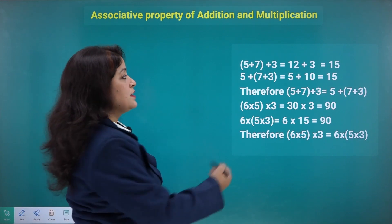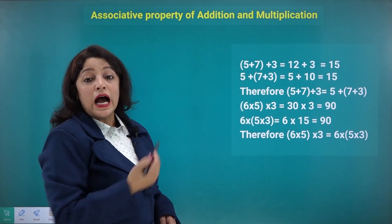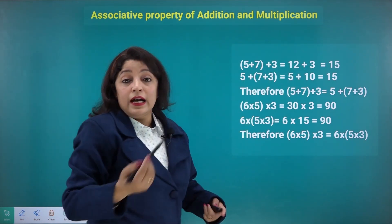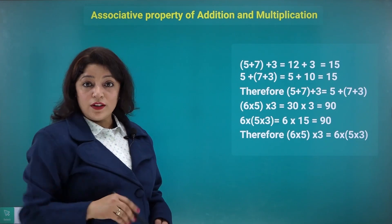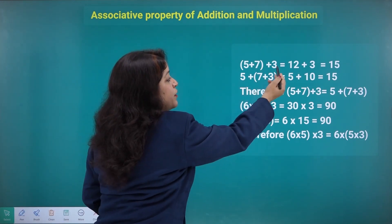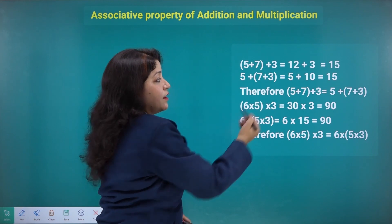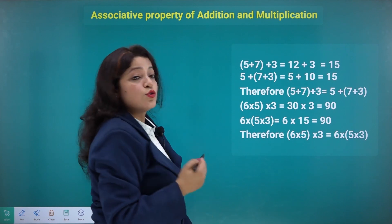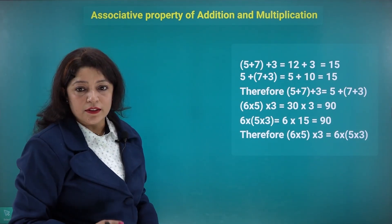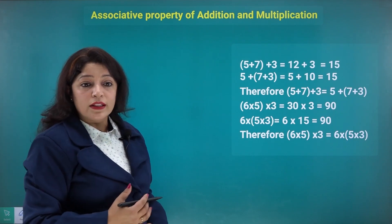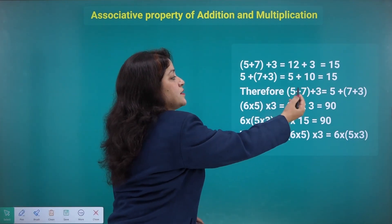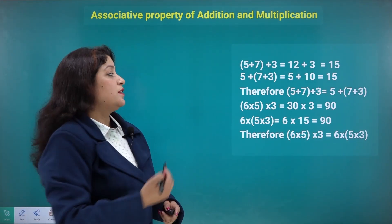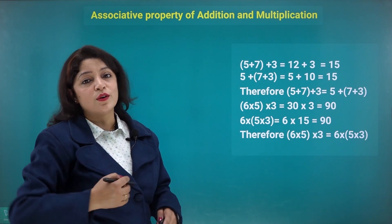For example, I may add 5 and 7 first, getting 12, then add 3 to get 15. On the other way, if I first make a group of 7 and 3, I get 10, and then 5 plus 10 gives me 15. Therefore, whether I group as (5+7)+3 or 5+(7+3), the result remains the same: 15.